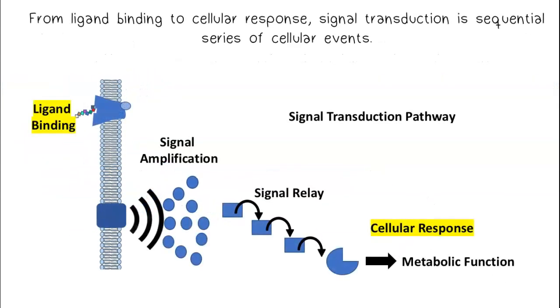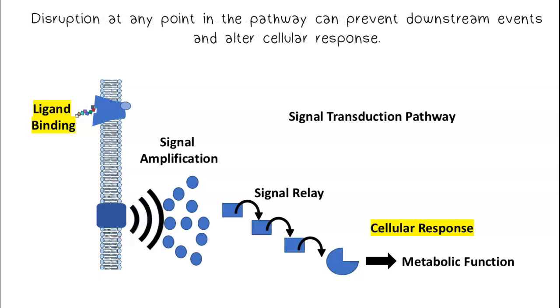From ligand binding to cellular response, signal transduction is a sequential series of cellular events. Disruption at any point in the pathway can prevent downstream events and alter cellular response.